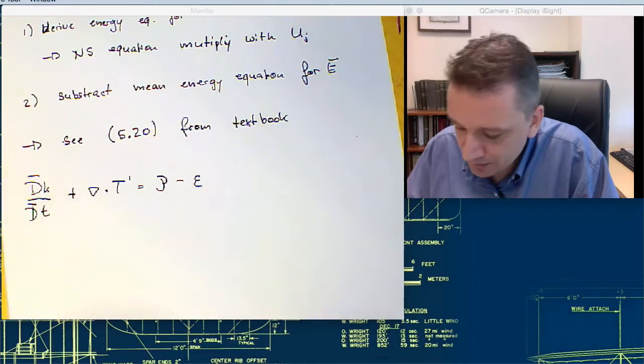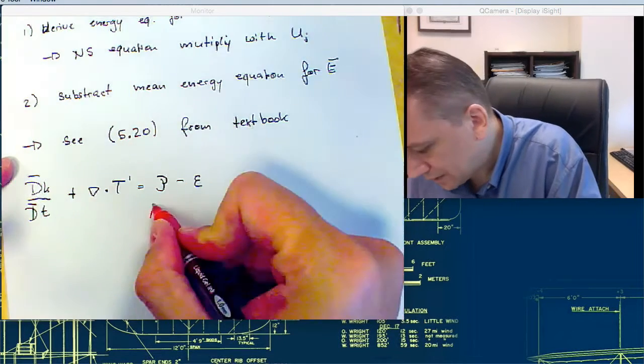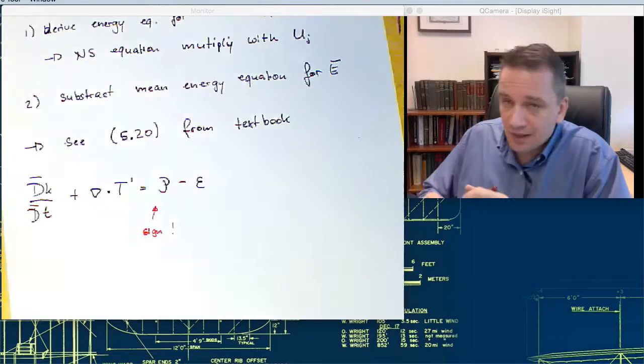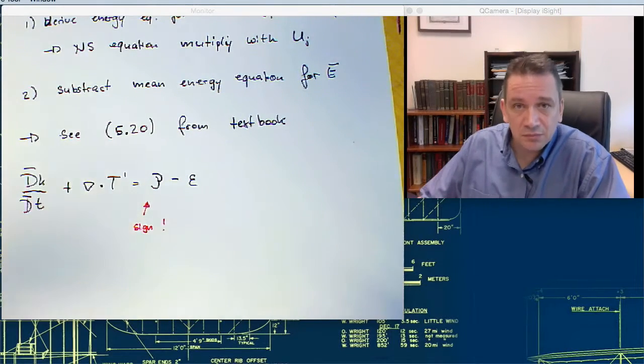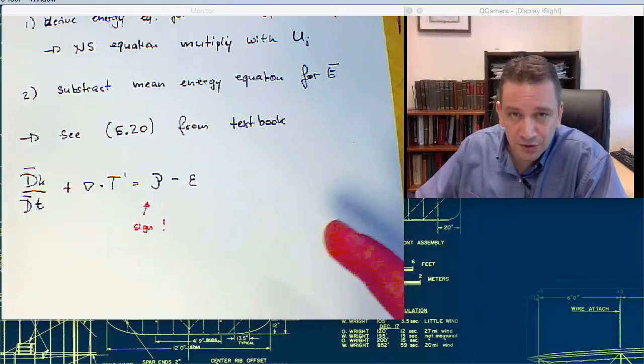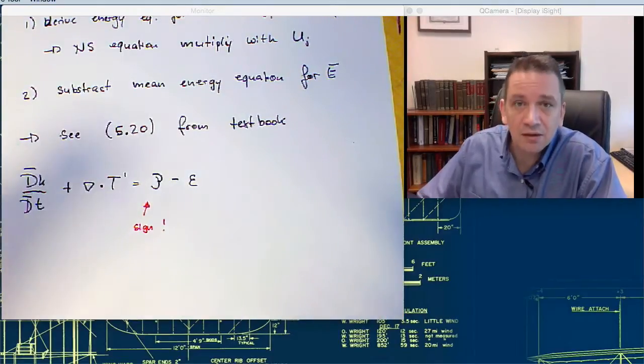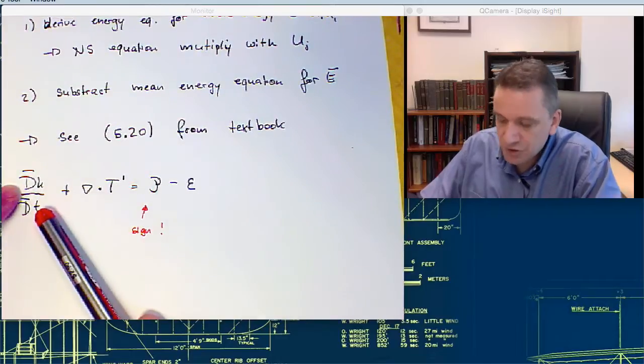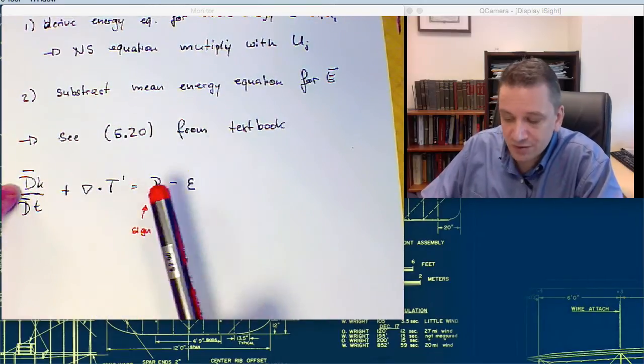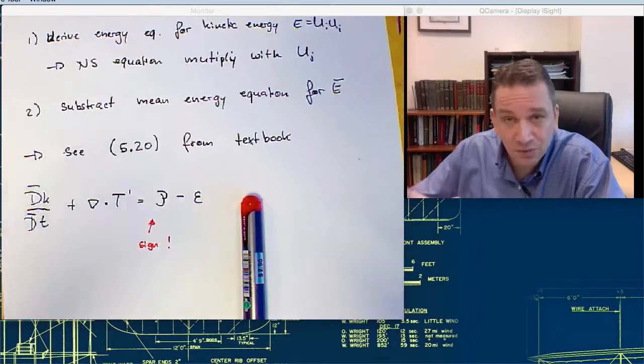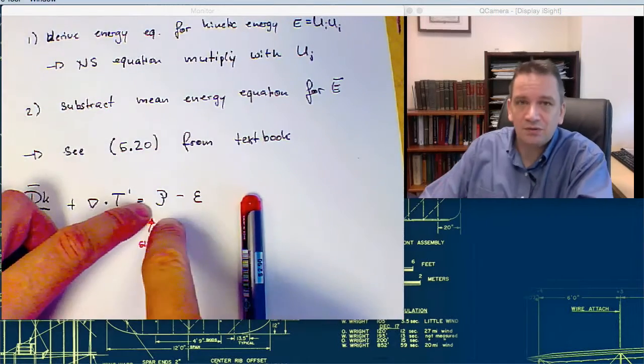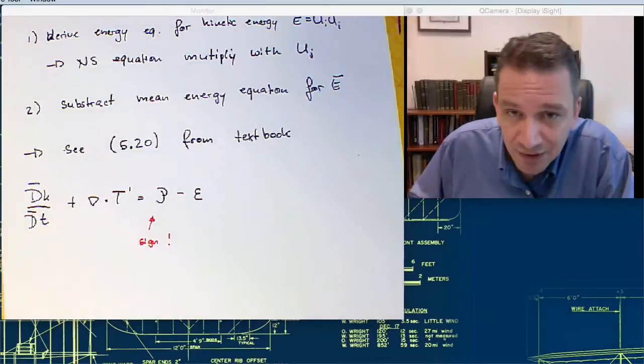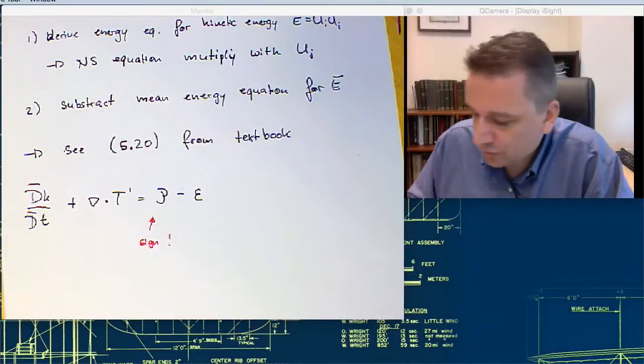You see here the P term again. But notice now the sign. The sign is now positive. That means there's the term that you can find in both equations, that you can find in the energy equation for the mean flow field, as well as the energy equation for the turbulent motions, but with different signs. So that means that energy now coming from the mean flow field is going to be ending up over here. So that is the exciting result that you can find now physical meaning for this particular term.